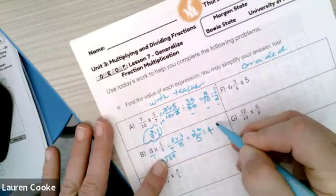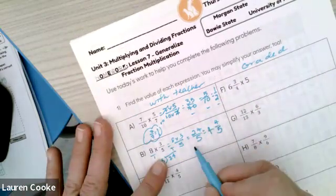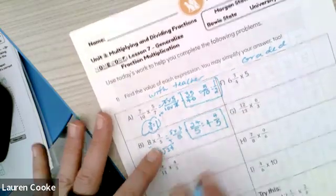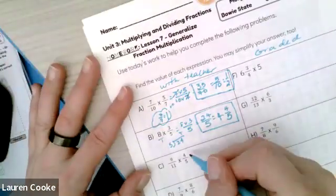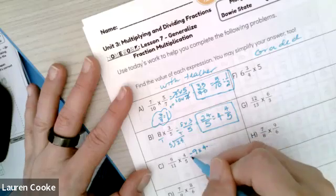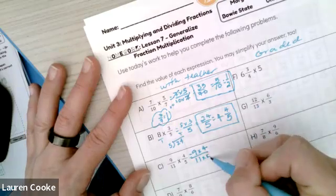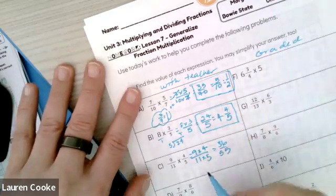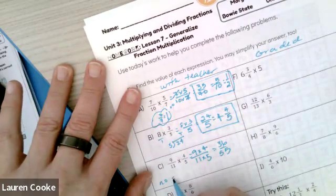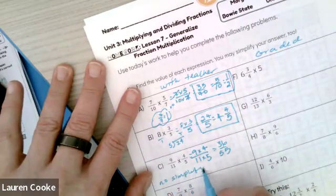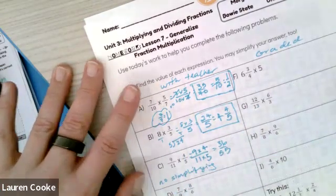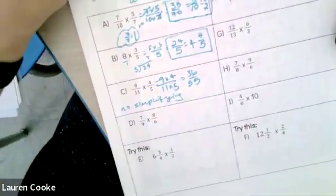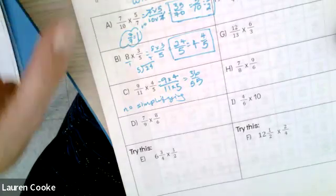Either of these are correct. Next one: nine times four divided by 11 times five. I'm going to get 36 over 55. And there is no simplifying that can happen here because there is no factor in the numerator numbers or the denominator numbers that matches.